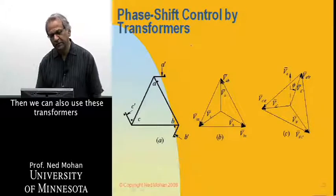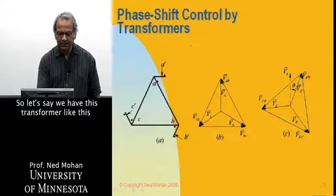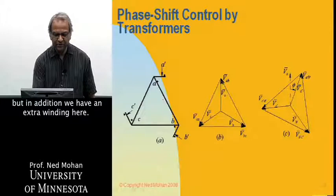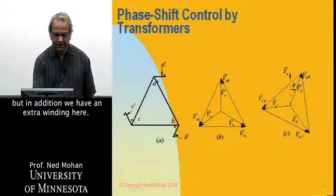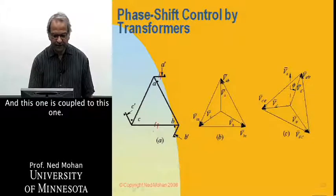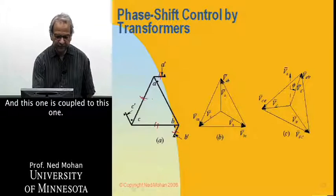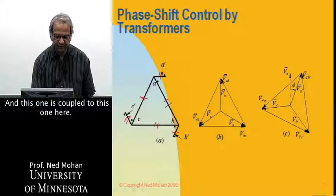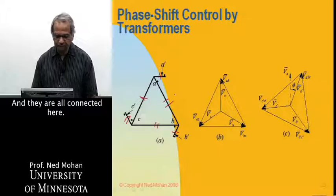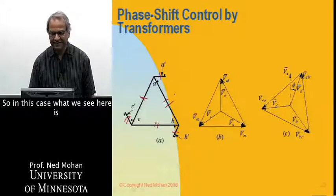Then we can also use these transformers to create phase shift. So let's say we have a transformer like this, but in addition, we have an extra winding here. This one here is coupled to this one, and this one is coupled to this one, and this one is coupled to this one here. And they're all connected here.